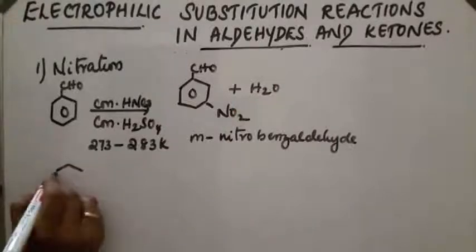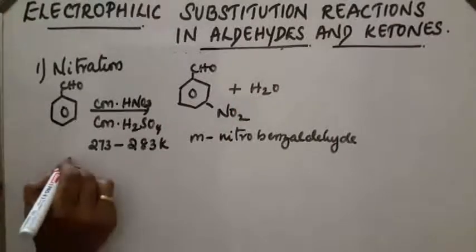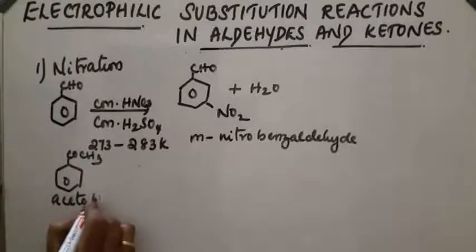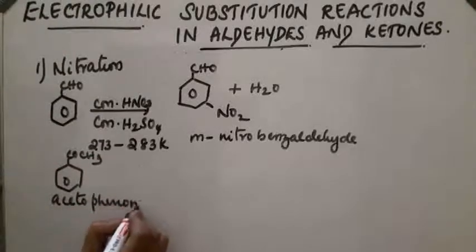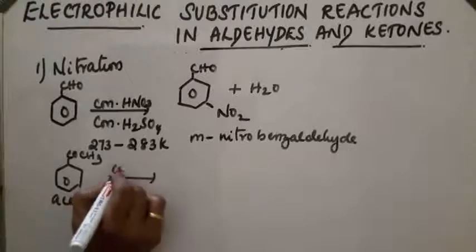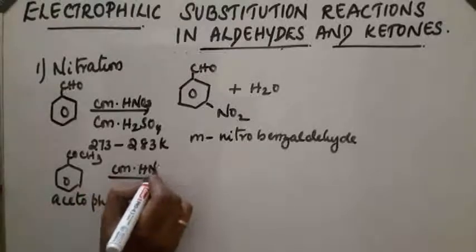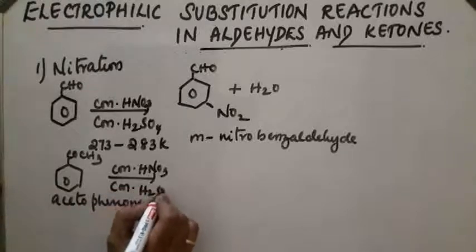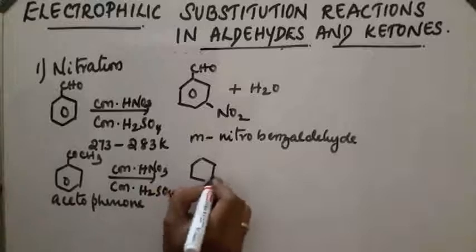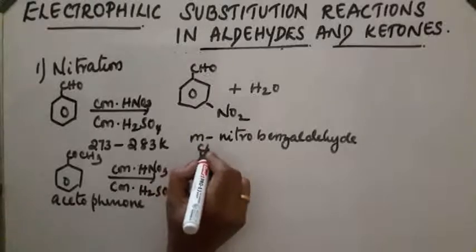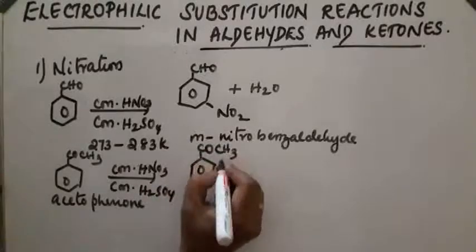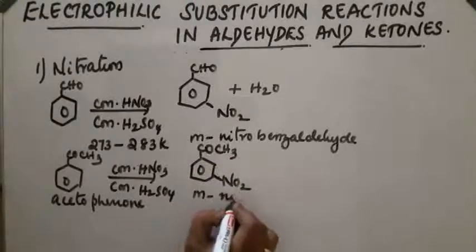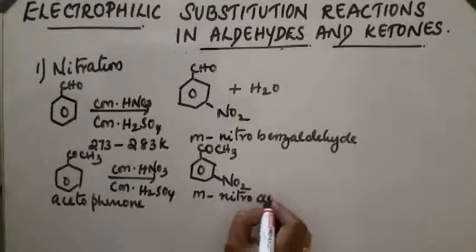Similarly, in the case of acetophenone, which is a ketone (COCH3), reaction with concentrated nitric acid and concentrated sulfuric acid gives the product meta-nitroacetophenone.